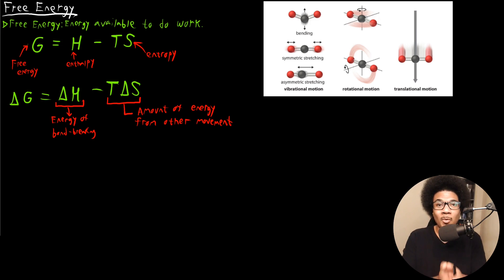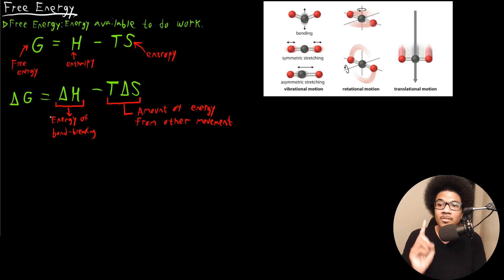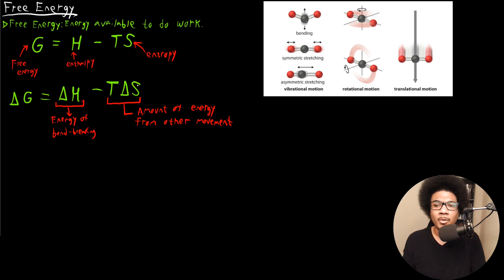So the energy that's available to do work — the free energy — is going to be the energy from bond breaking minus the energy contribution from all this other stuff that molecules can do. That's going to be the energy that's available to do work. So now from just being given this equation, it's probably not clear the exact link to spontaneity and the second law of thermodynamics, but there is a link that we're going to illuminate here.